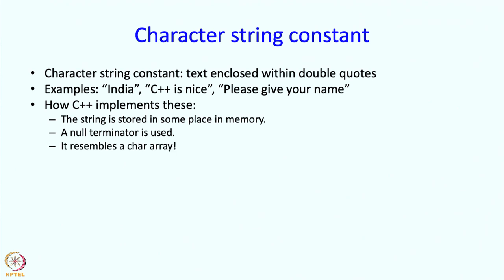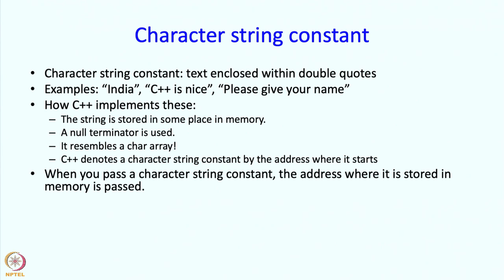This resembles a char array. So C++ denotes the character string constant by the address where it starts. It really treats it like a char array. But it is a char array that C++ itself has created. When you type this, C++ looks at it and stores it somewhere. And it says that whatever you have typed here is at this address. And it is the array stored at this address. So when you pass the character string constant, the address where it is stored in memory is passed. This happens just like any array.